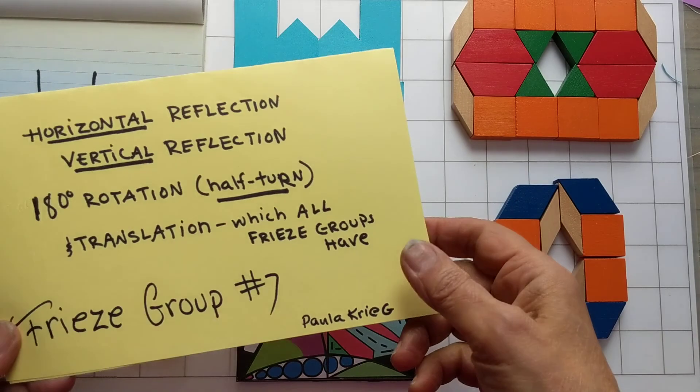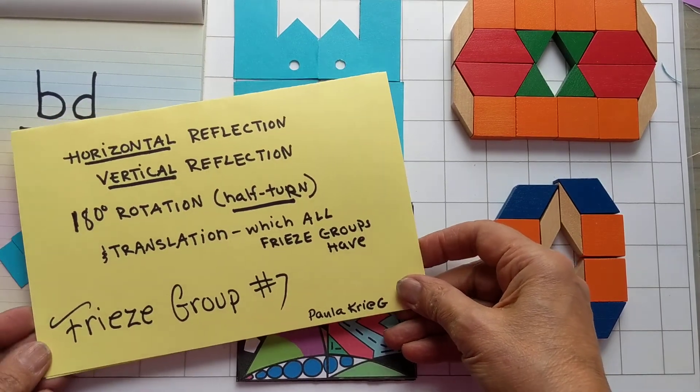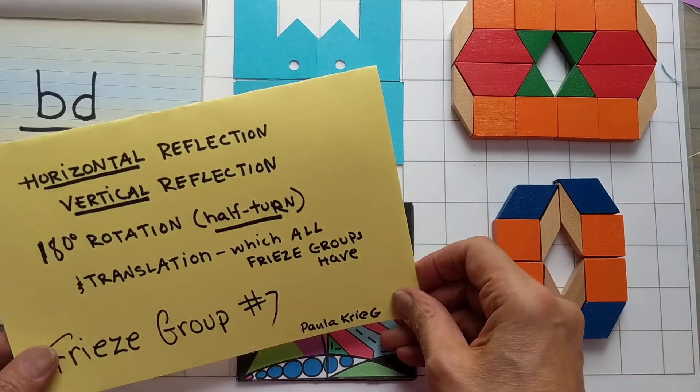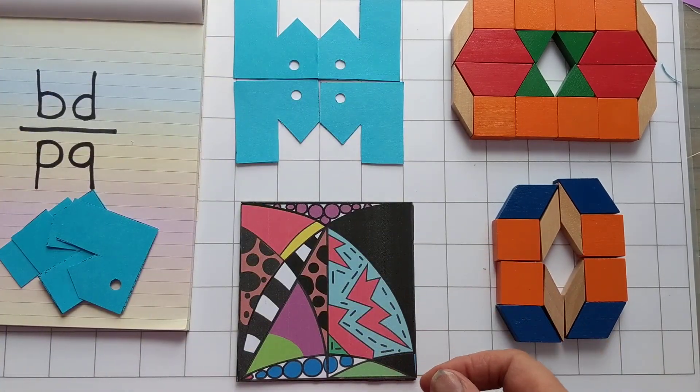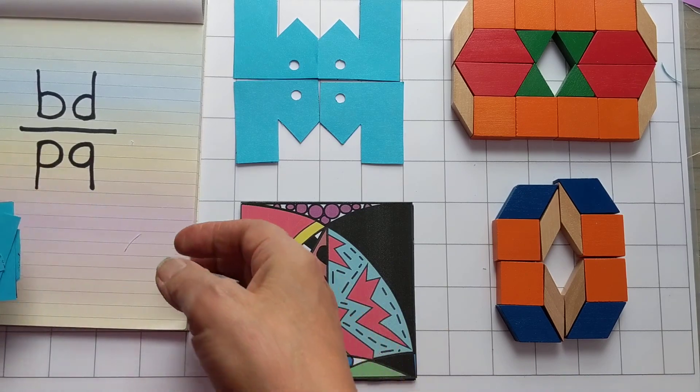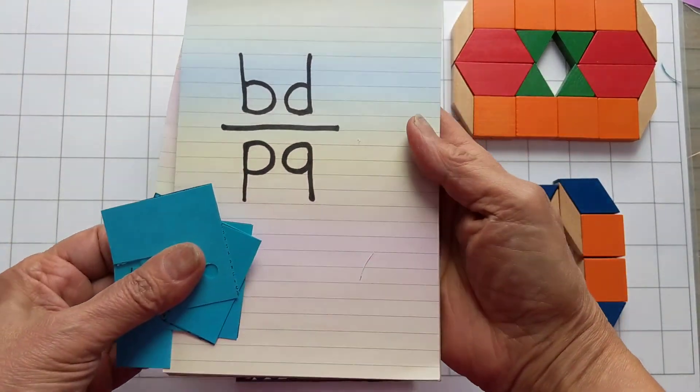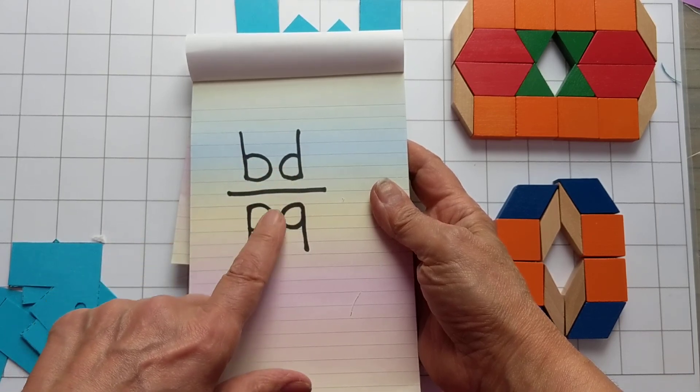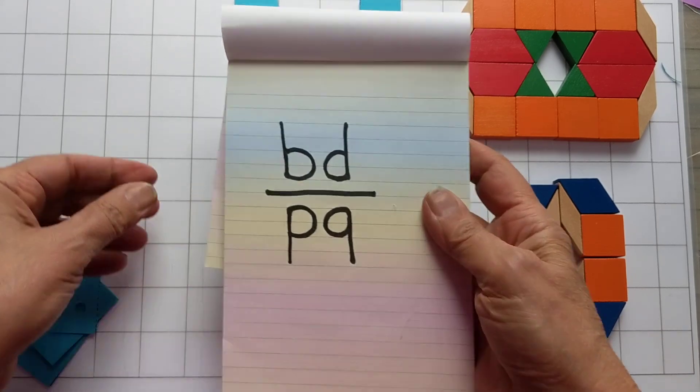This is the last of the seven freeze groups, wherever I've seen lists. This is always listed as the seventh one, as the last one. There's lots of ways of talking about it. I'm talking about it as if it's a B, D, P, and Q, because that's how the pattern is arranged.